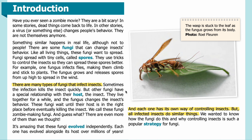Sometimes the infection kills the insect quickly, but other fungi have a special relationship with their host — the insect. They live together for a while, and the fungus changes the insect's behavior. These fungi wait until their host is in the right place before eventually killing the insect. We call these zombie-making fungi. It's amazing that these fungi evolved independently — each one has evolved alongside its host over millions of years, and each one has its own way of controlling insects, but all infected insects do similar things. We wanted to know how the fungi do this and why controlling insects is such a popular strategy for fungi.